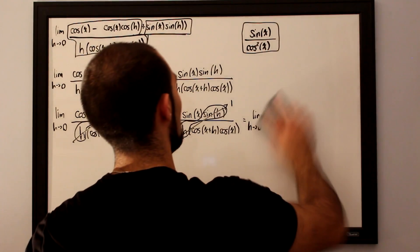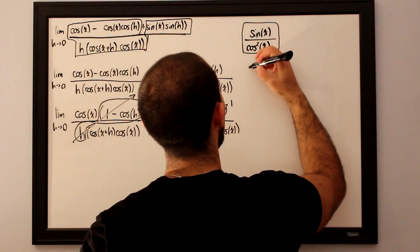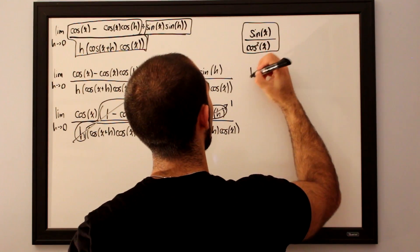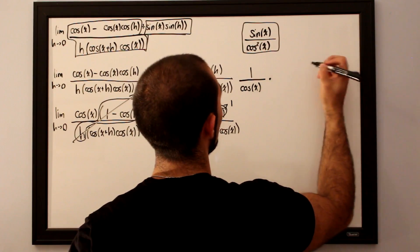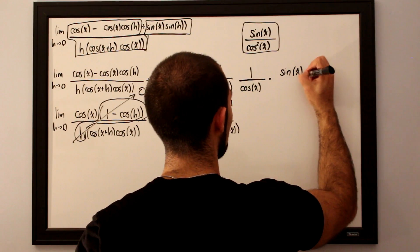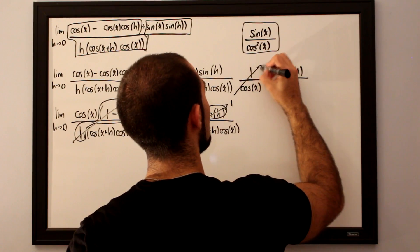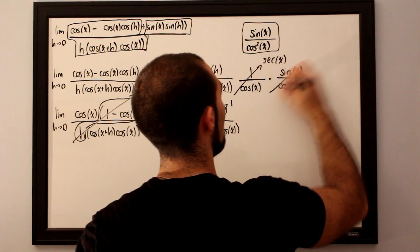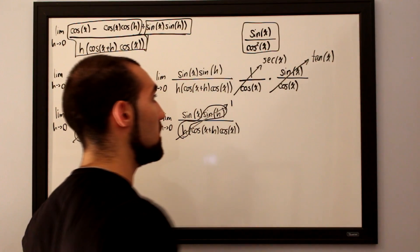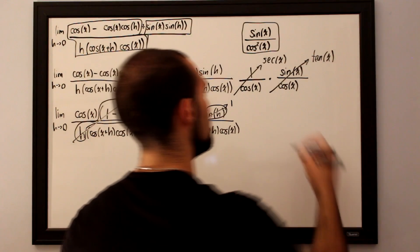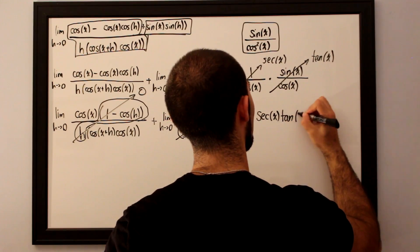We can split sine of x over cosine squared of x into 1 over cosine of x multiplied by sine of x over cosine of x. The first factor is secant of x and the second factor is tangent of x. Therefore, the derivative of secant of x, using the limit definition of the derivative, is secant x times tangent x.